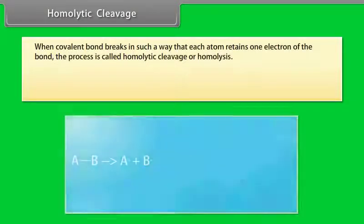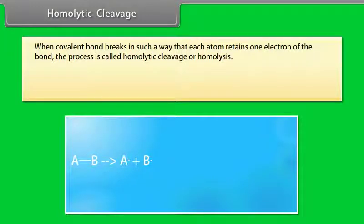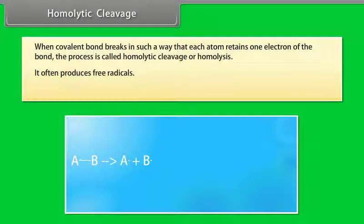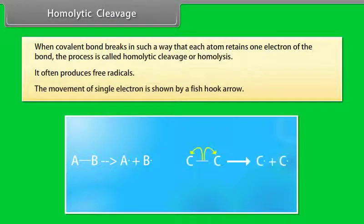Homolytic cleavage: when a covalent bond breaks in such a way that each atom retains one electron of the bond, the process is called homolytic cleavage or homolysis. It often produces free radicals. The movement of a single electron is shown by a fishhook arrow.